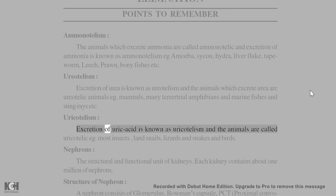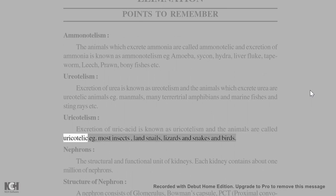Uricotelism: Excretion of uric acid is known as uricotelism, and the animals are called uricotelic. Examples include most insects, land snails, and lizards.